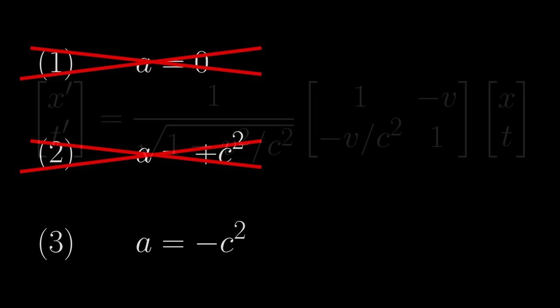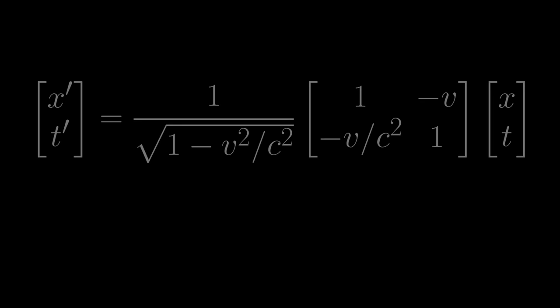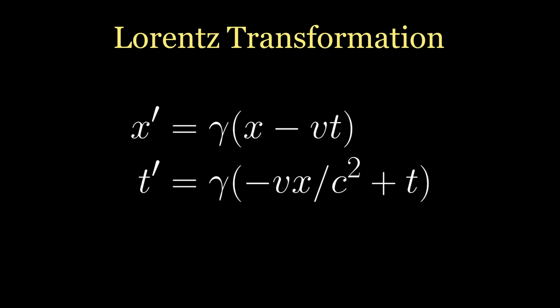Our final transformation, therefore, must take on the following structure. Finally, let us remove the matrix vector notation and write the transformation in its standard form. This expression has a name in physics, and it is called the Lorentz transformation. It is also an incredible result when you think about it. Remember that we started this thought experiment by asking a seemingly trivial question and expecting a trivial result. Yet of all the different mathematical possibilities we could have imagined for transforming between inertial frames of reference, this is the only one that is consistent with our assumptions.